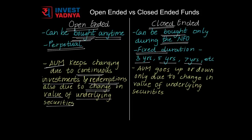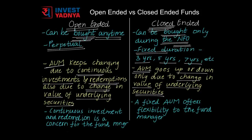In case of closed-ended funds, any new investment is not possible after the closure of the NFO, and redemption is not a possibility unless the duration of the fund is over. So, the total number of outstanding units of a closed-ended fund always remains the same. The assets under management go up or down purely due to change in the value of underlying securities, and not due to the continuous buying or selling of fund units.